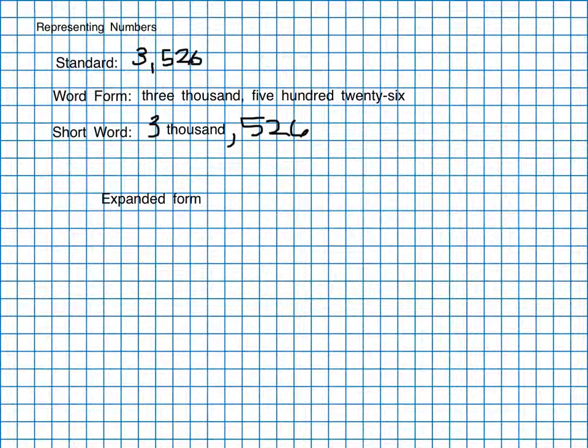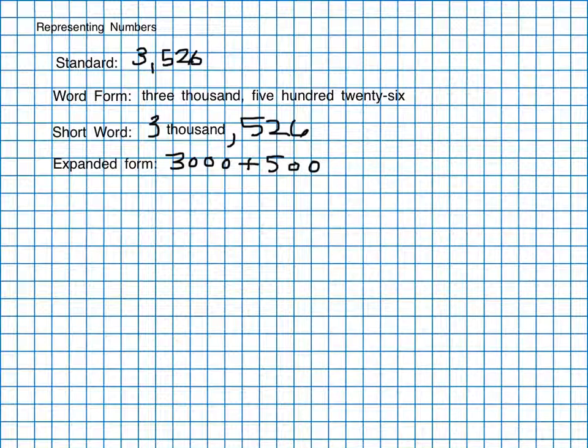Expanded form is just basically when we take the number and break it into the parts we have: three thousand plus five hundred plus twenty plus six. That's a more, as we start really looking at finding new ways to add and things like that, that's a nice way to look at numbers because we can break it apart and really manipulate the numbers in that manner.